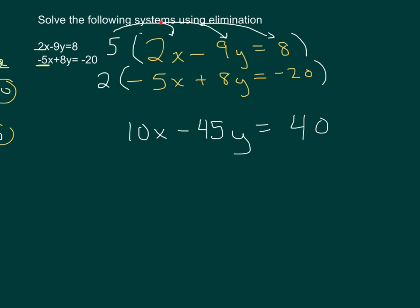So again, just a heads up, what we did is we multiplied the 5 in here. Now we're going to do the same thing with the 2 in the second equation. We're going to multiply the 2 by the negative 5x, and that's going to give us a negative 10x. 2 times 8y is a positive 16y. And then 2 times negative 20 is negative 40.